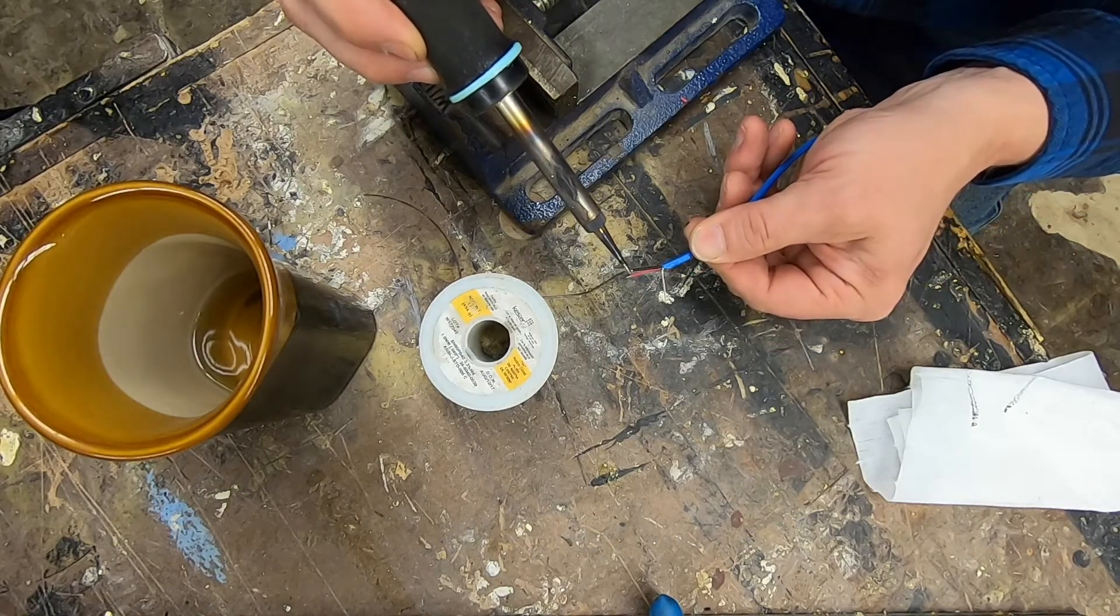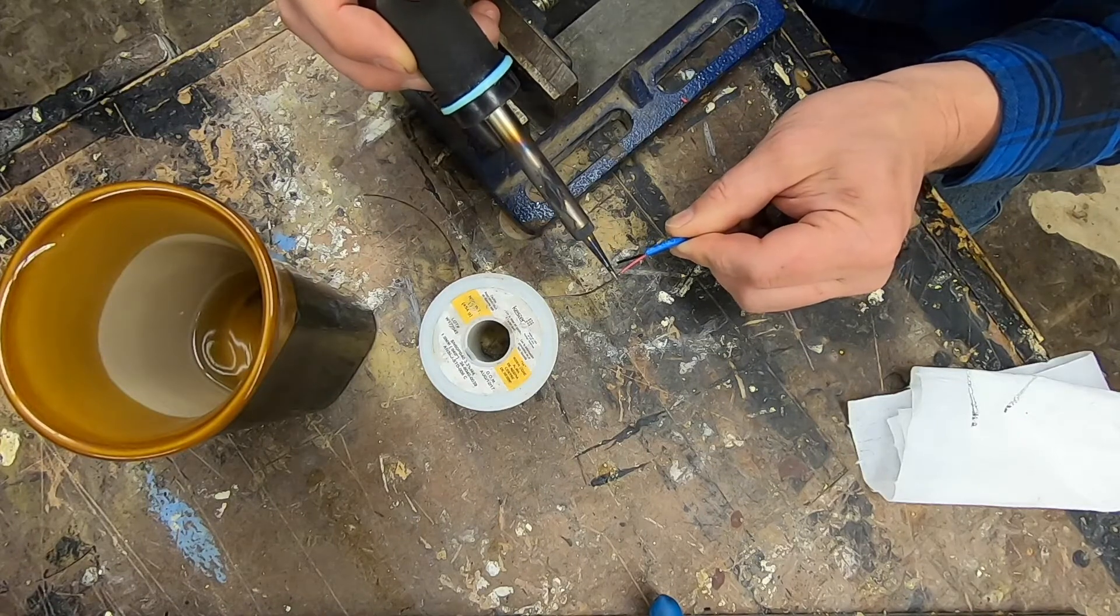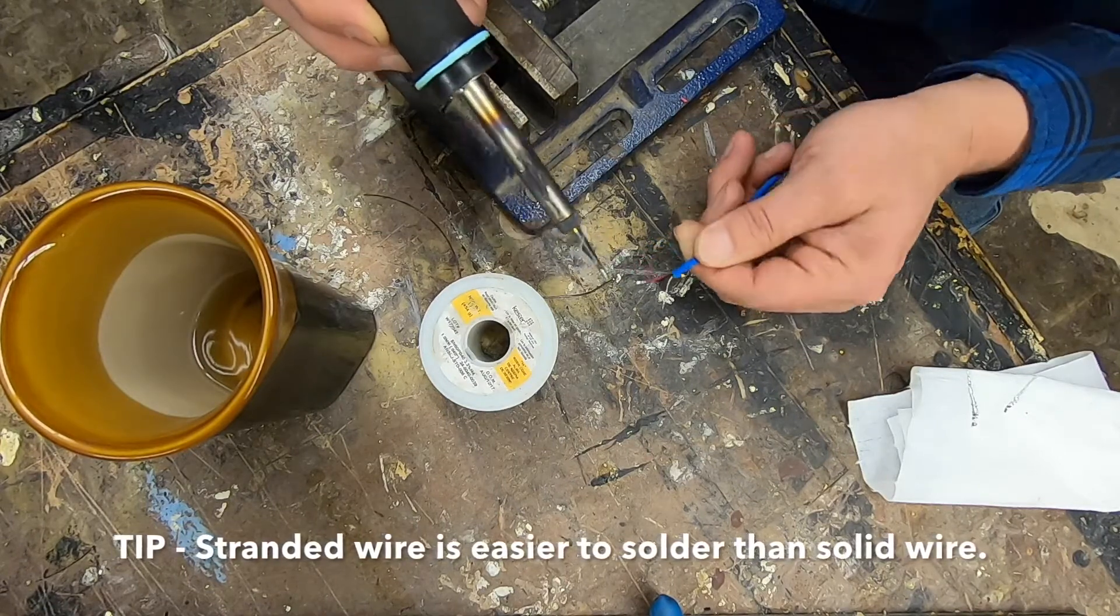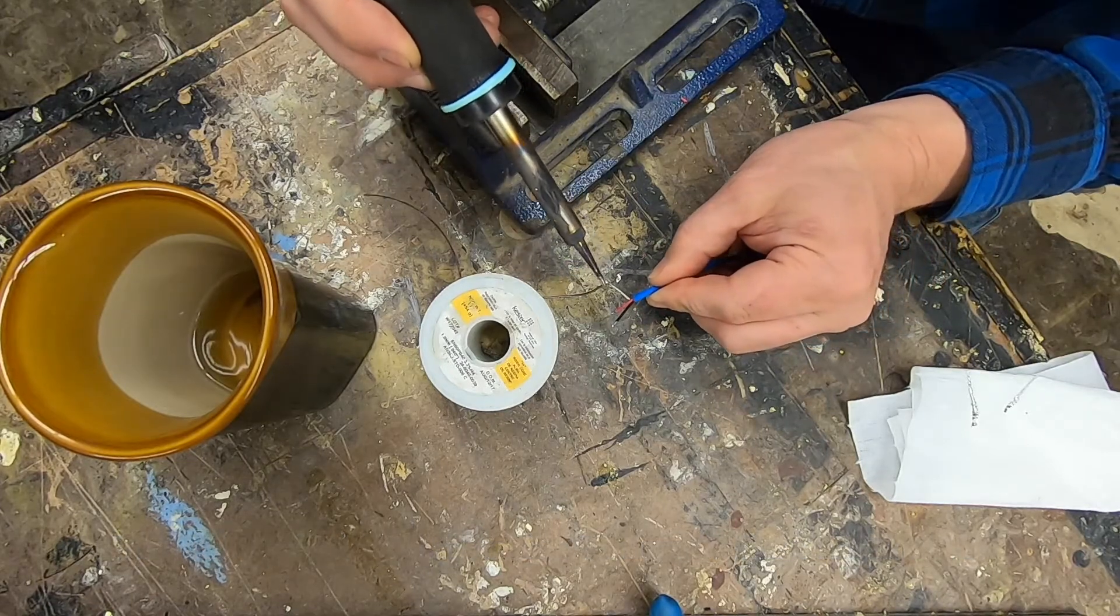And I'm going to tin the tips of those wires. I'm going to let the solder wick up inside those strands. This solder's melting point is about 375 degrees.